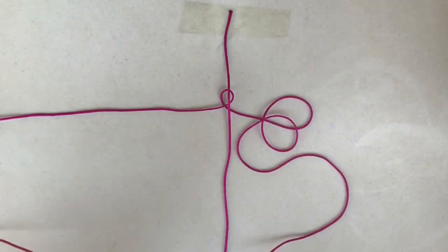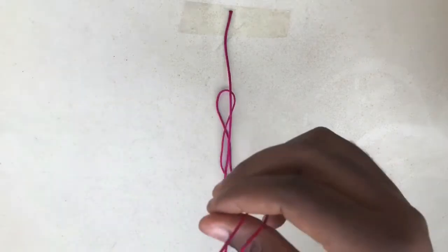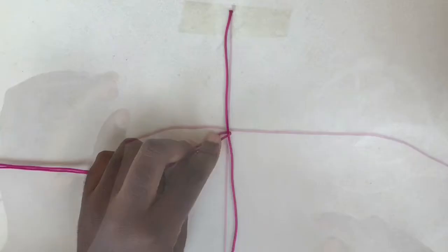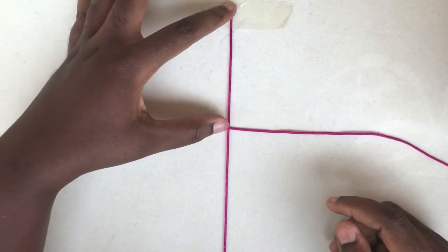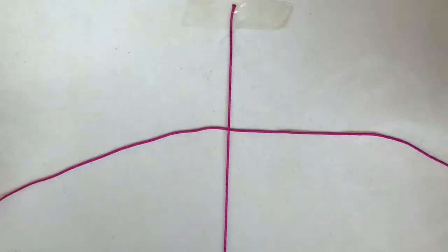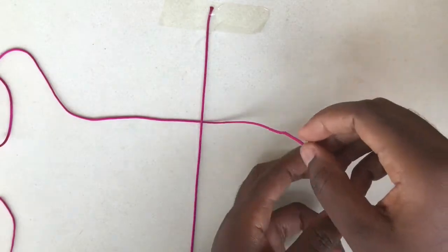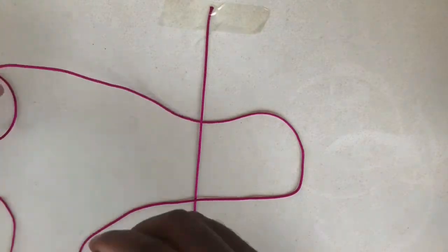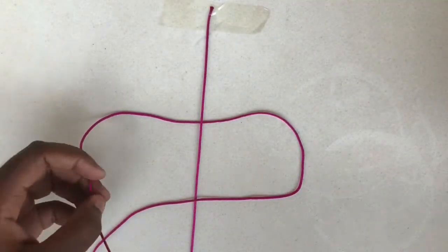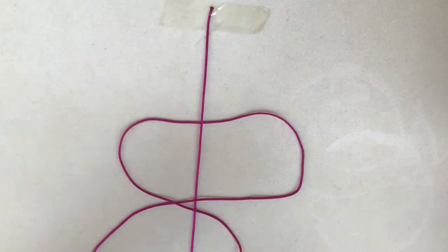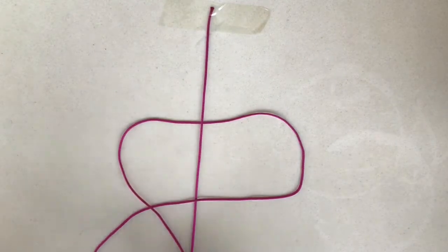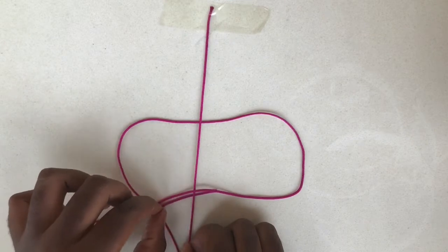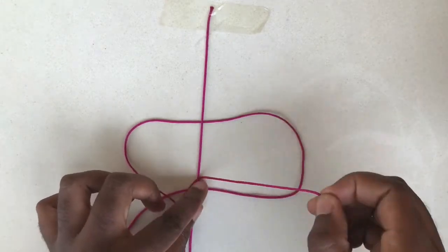Before we start making knots, you have to leave about 4 inches, which is 11 centimeters, or you can use a ruler to make it accurate. Now we are going to start making knots. Take the right one over the middle one, then take the left one over the right one, under the middle one, and through the loop that has been created on the right side. Pull to make the first knot.